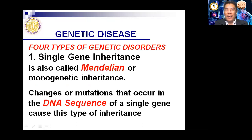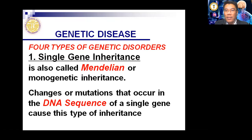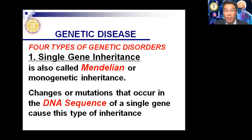The first type of genetic disorder is single gene inheritance. When we talk about genes, we are talking about DNA — deoxyribonucleic acid — in sequence. A mutation in the DNA sequence of a single gene causes this type of inheritance. This is why children can match their parents' DNA significantly, measured by percentage. Single gene inheritance is also called Mendelian or monogenetic inheritance because one single gene affects this type of inheritance.